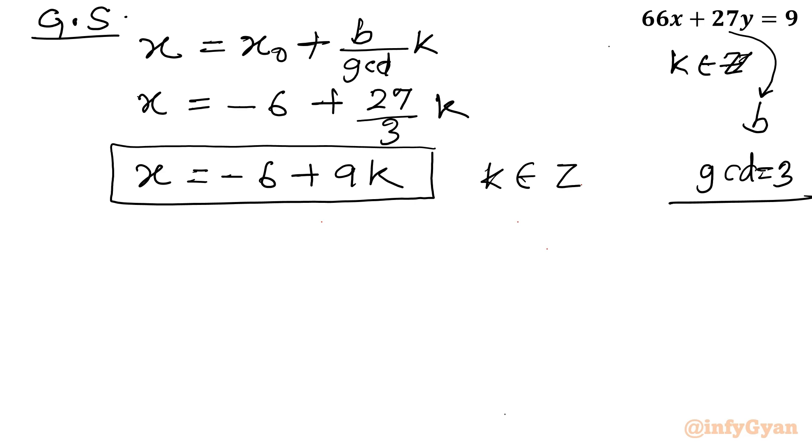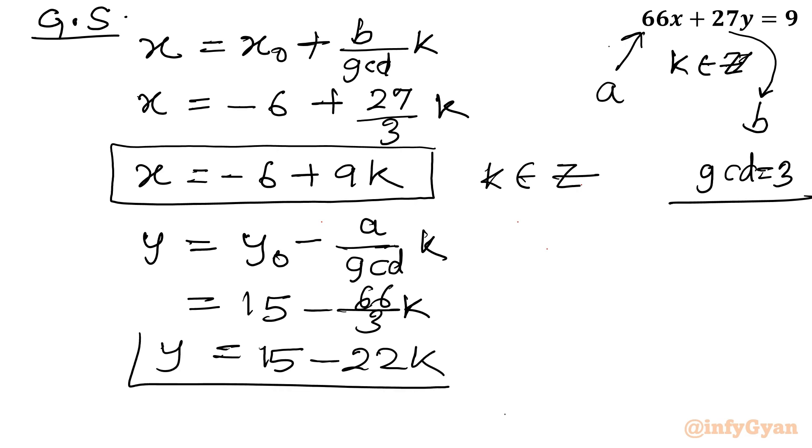Now y. So general formula for y calculation with respect to the particular solution y0: it is y equal to y0 minus a over gcd times k. Now let us put the value of y0. It was 15 minus a value is 66 over 3 times k. So it will become 15 minus 22k. This is general solution for y, where k belongs to integer.